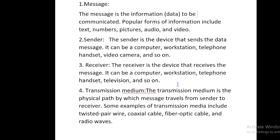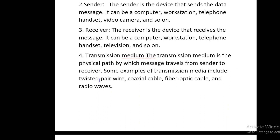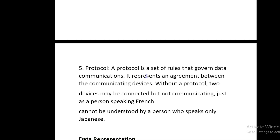Four: transmission medium. The transmission medium is the physical path by which a message travels from sender to receiver. Examples include twisted pair wire, coaxial cable, fiber optic cable, and radio waves. Five: protocol. A protocol is a set of rules that govern data communications, representing an agreement between communicating devices. Without a protocol, two devices may be connected but not communicating — just as a person speaking French cannot be understood by a person who speaks only Japanese.